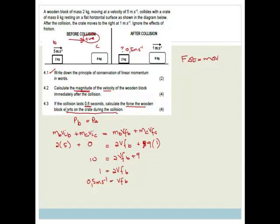It says calculate the force the wooden block exerts on the crate during the collision. Now it doesn't matter if you choose to use the crate or the wooden block for this change. You just have to use only one. So you can use the wooden block change in momentum, or you can use the crate's change in momentum. Either way, you're going to get the right answer. So it says calculate the force the wooden block exerts on the crate. So I am going to choose the wooden block.